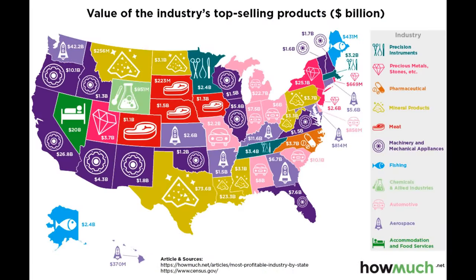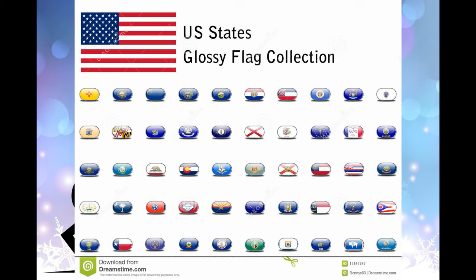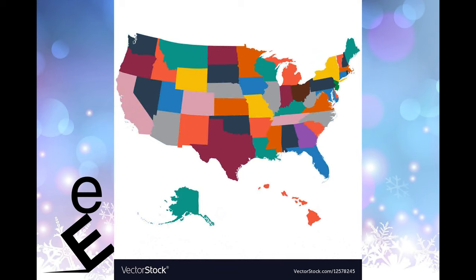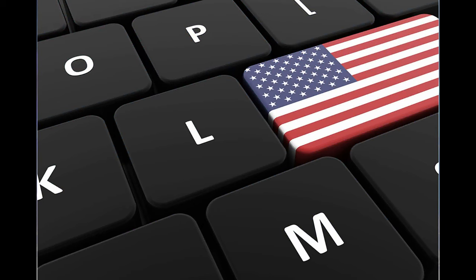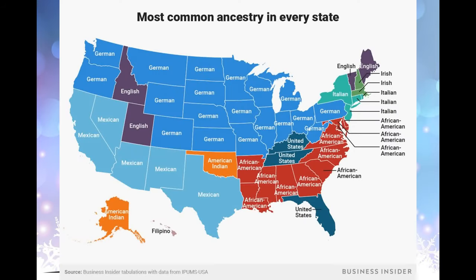In the United States, a state is a constituent political entity, of which there are currently 50. Bound together in a political union, each state holds governmental jurisdiction over a separate and defined geographic territory and shares its sovereignty with the federal government. Due to this shared sovereignty, Americans are citizens both of the Federal Republic and of the state in which they reside. State citizenship and residency are flexible, and no government approval is required to move between states, except for persons restricted by certain types of court orders.